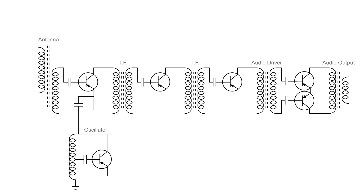This is a generic drawing of a transistor AM radio. I injected a signal at this point — or maybe it was at this point — but very early in the front of the radio. In the video you saw that when I changed the frequency of the frequency generator, it actually tuned in stations like a regular AM radio, because that generator was taking the place of the local oscillator of the radio.